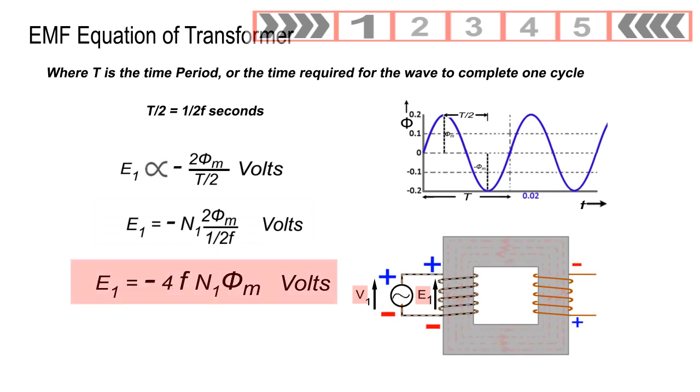Now, this will become E1 equals minus 4fN1φM volts. This expression gives the average value of induced EMF in the primary winding.